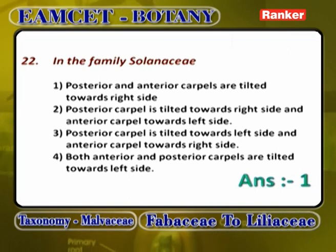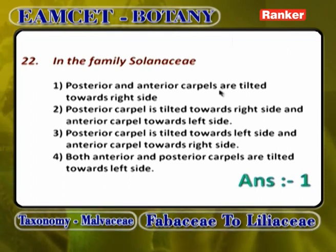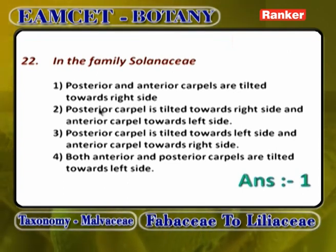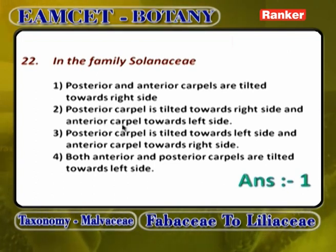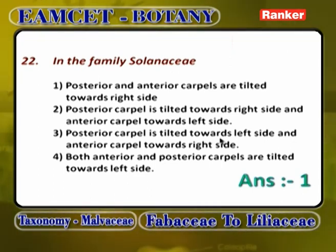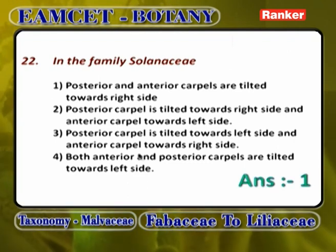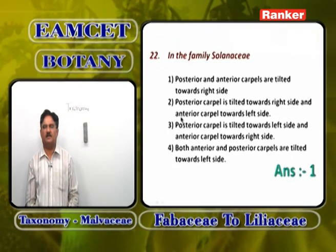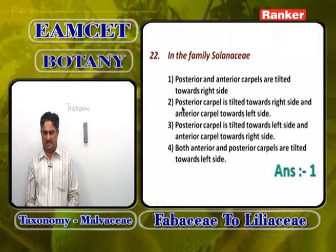In the family Solanaceae: posterior and anterior carpels both tilted to right side — wrong. The correct answer is: posterior carpels are tilted towards the right side and anterior carpels are tilted towards the left side. Answer is 2.